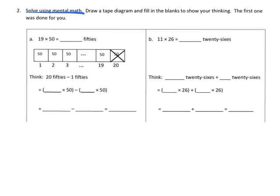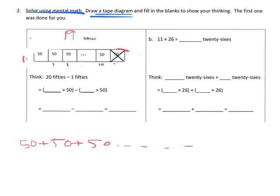Now here we're going to be solving using mental math, but we're going to use a tape diagram to help us understand how to think about this. For example, 19 times 50 — we're going to think of that as 19 fifties, like 50 plus 50 plus 50, nineteen times. That's what this tape model shows: a bunch of fifties lined up next to each other. To make our mental math easy, we think of it as 20 fifties, because 20 times 50 is way easier to do in our head than 19 times 50.